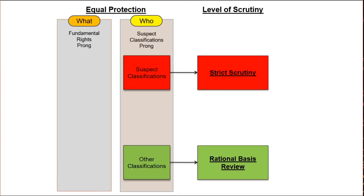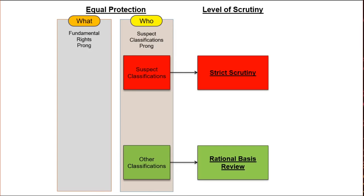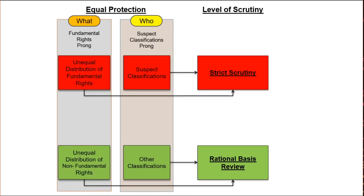Back to our diagram. Let's figure out what's happening in the fundamental rights prong. Remember, the suspect classification prong looks at who is affected, and the fundamental rights prong looks at what is being distributed unequally. Here, the dividing line is between fundamental rights and non-fundamental rights.